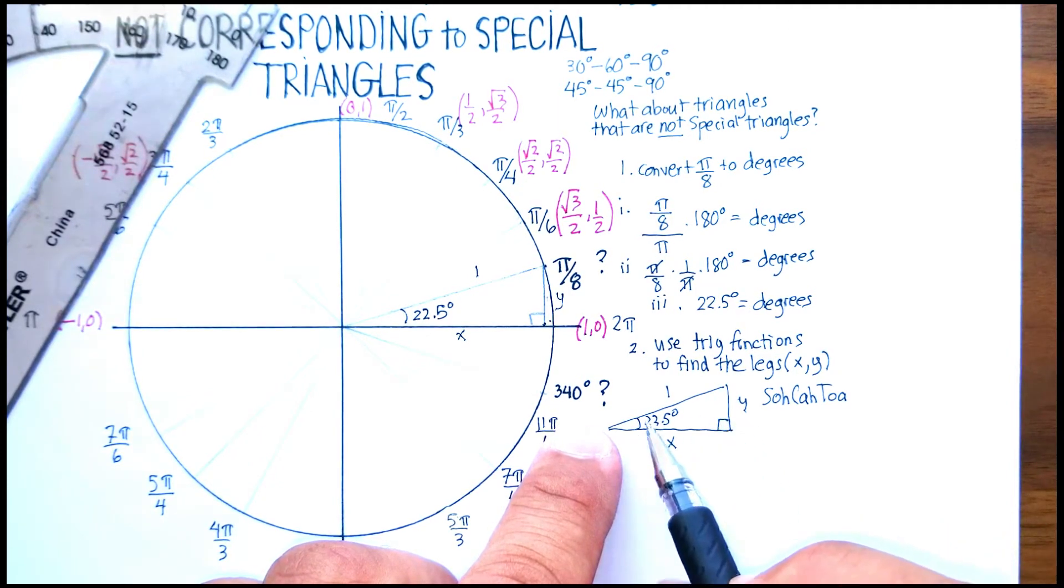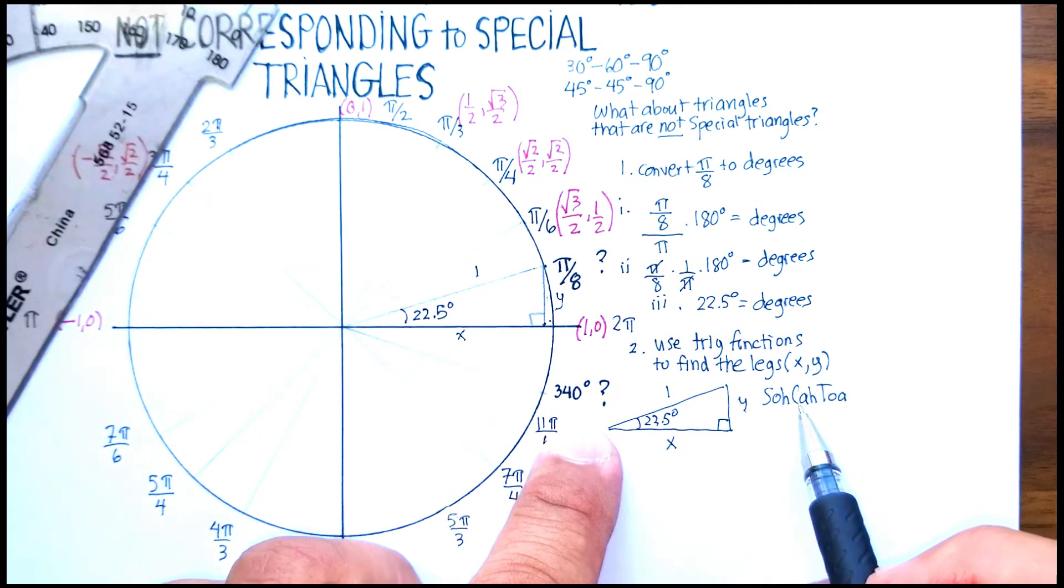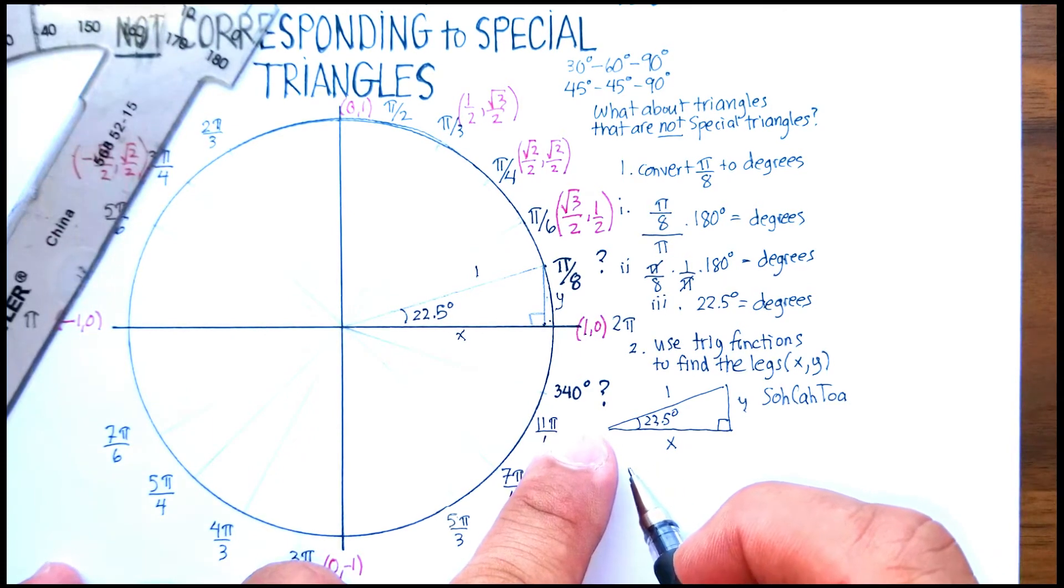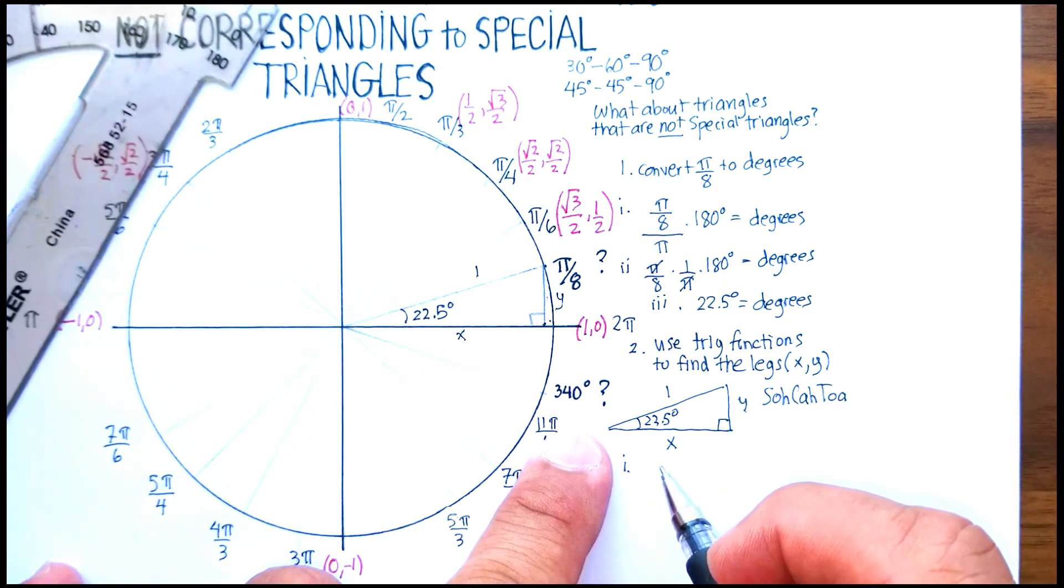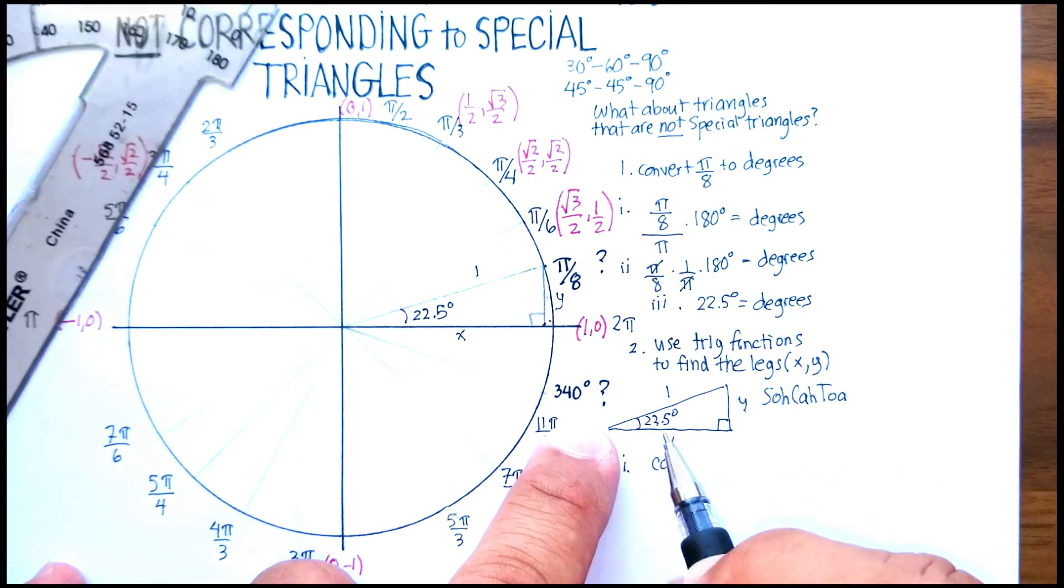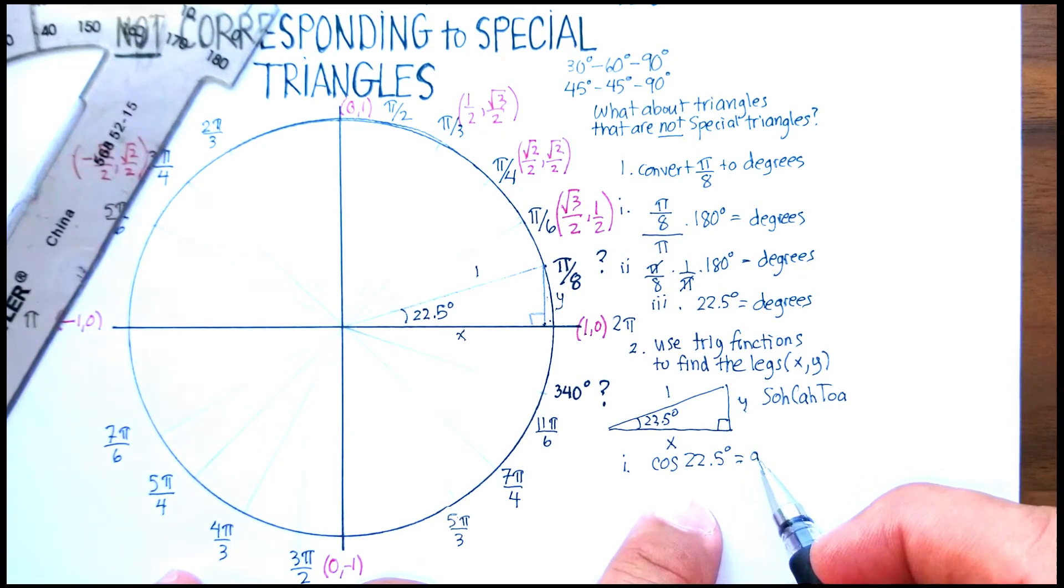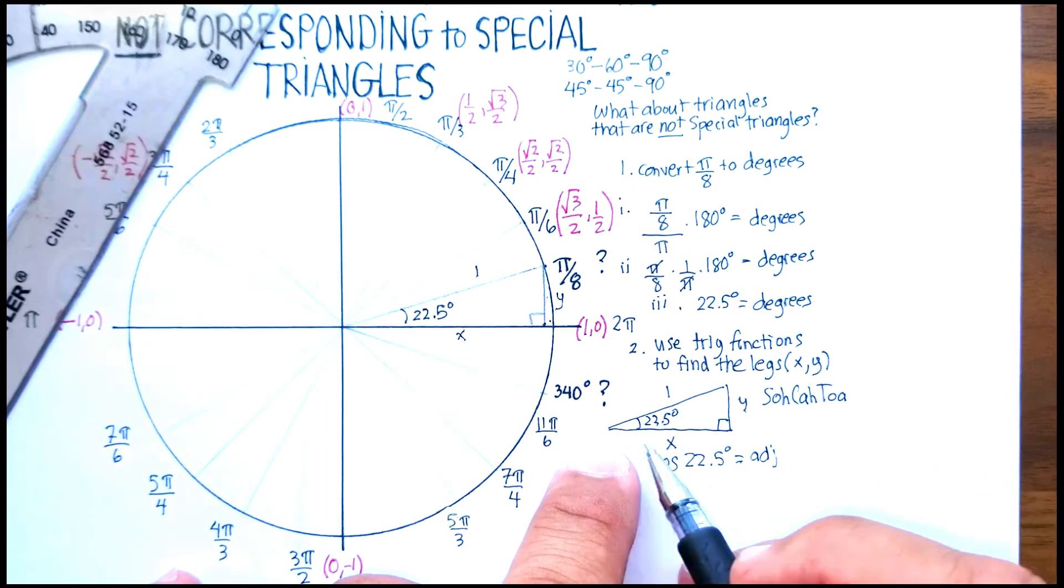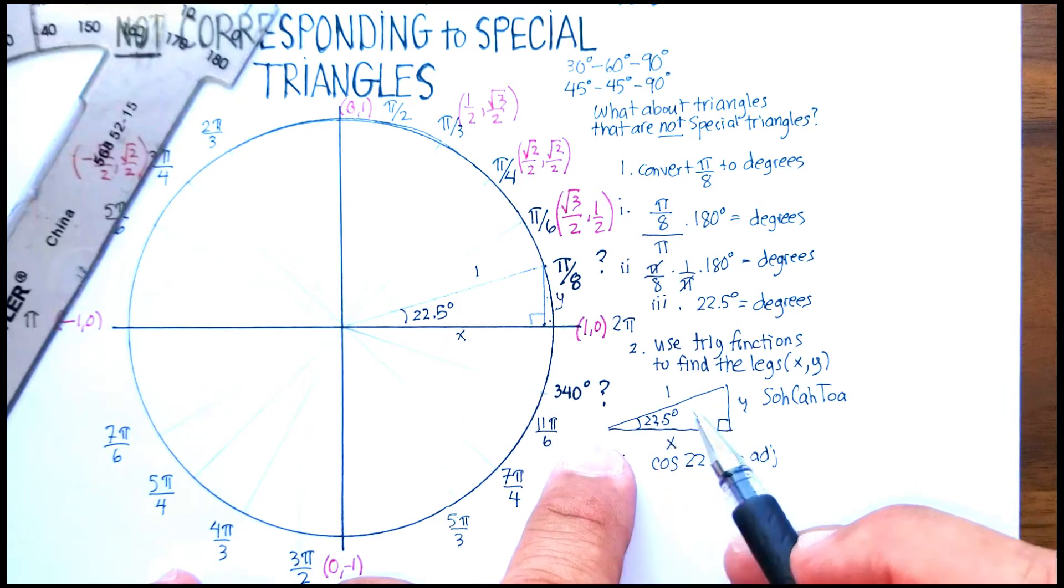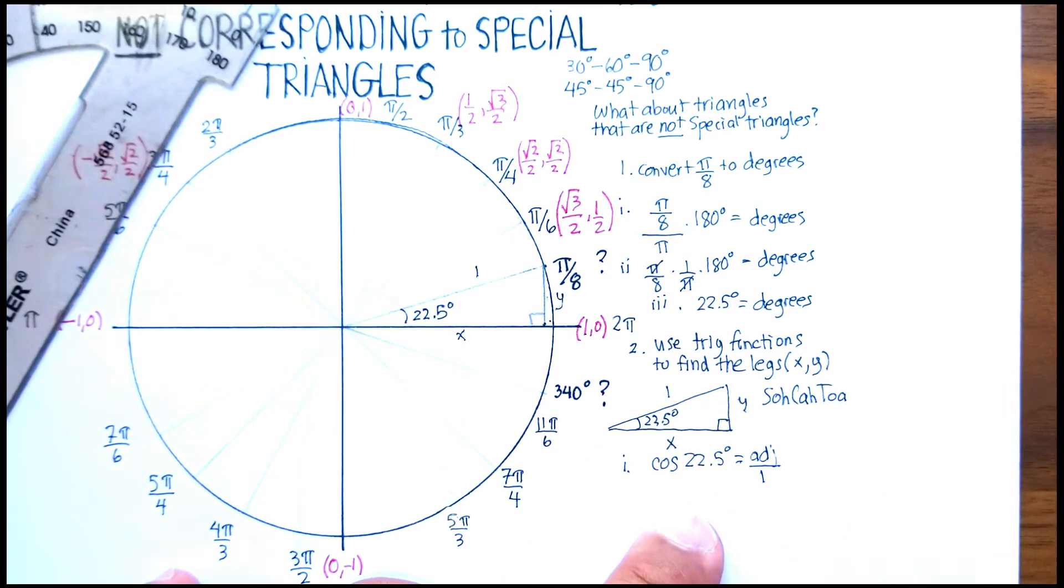So we're going to say, and here's our first step: the cosine of 22.5° will be equal to the adjacent—in this case, that's going to be our x—over the hypotenuse, which is 1. Now let's go ahead and look up the cosine of 22.5°, and then just go to your calculator.